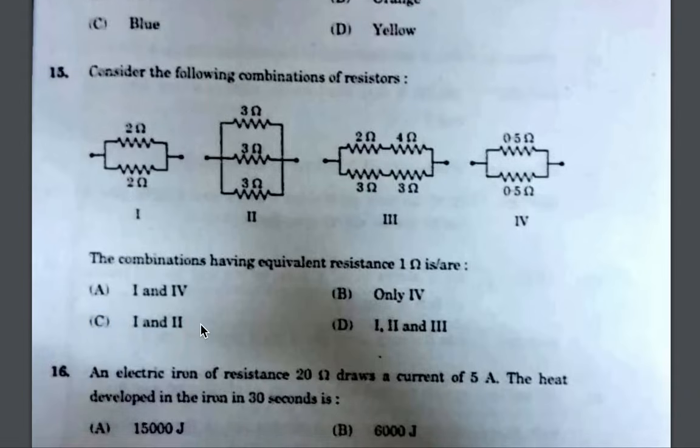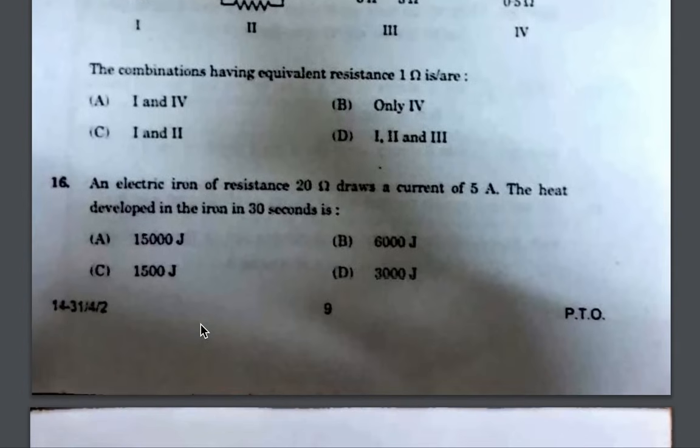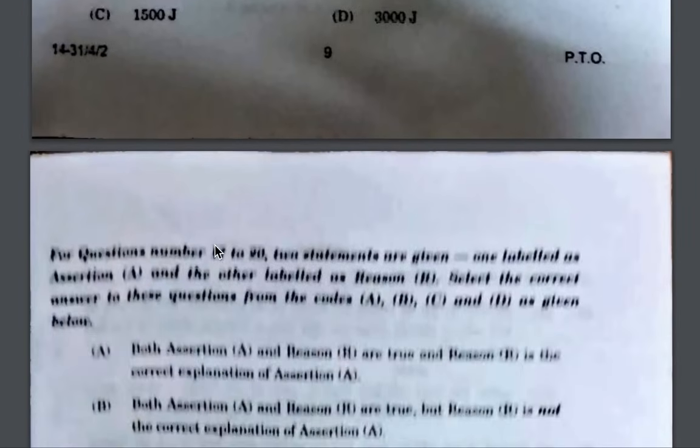Next, looking at figures 1 and 2, option C is the right answer — it will have equivalent resistance of 1 ohm. Next, the answer is 15,000 joules using the formula H = I²Rt. Now let's move on to the assertion-reason section.